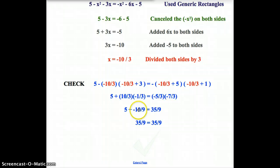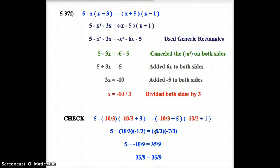On the left side, I combine my 5 plus negative 10 ninths to get 35 ninths. Because both sides balance, and they check, I know that my answer up here at negative 10 thirds is correct.